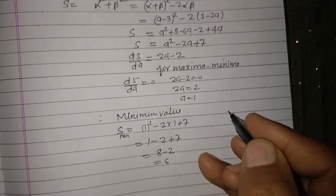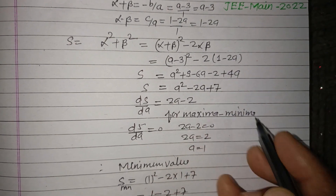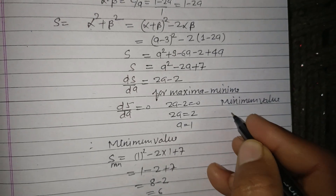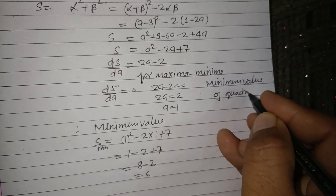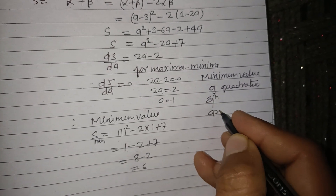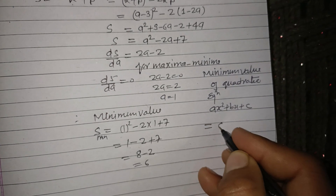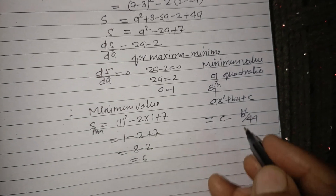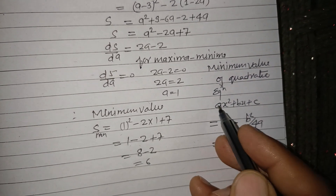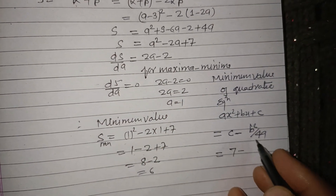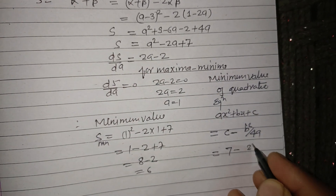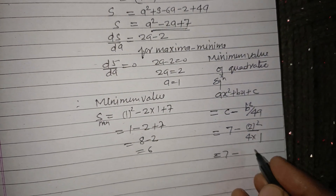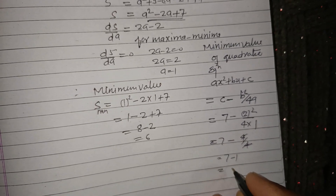We can also use the formula for the minimum value of a quadratic: c - b²/4a. Here S = a² - 2a + 7, so comparing: c = 7, b = -2, a = 1. Minimum = 7 - (2²)/(4×1) = 7 - 4/4 = 7 - 1 = 6.